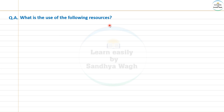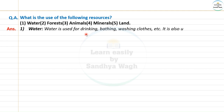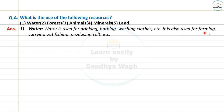Question number one: what is the use of the following resources — water, forests, animals, minerals, land? Starting with water: water is used for drinking, bathing, washing clothes, etc. It is also used for farming, carrying out fishing, and producing salt.